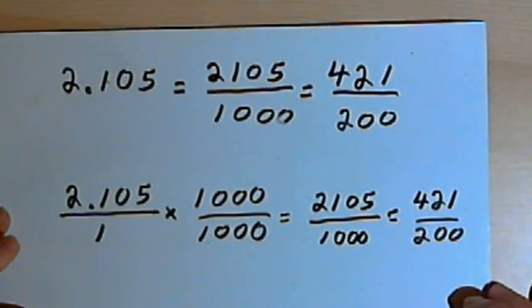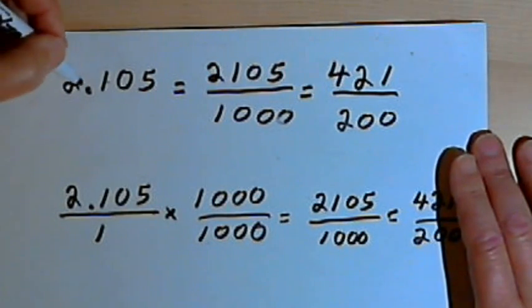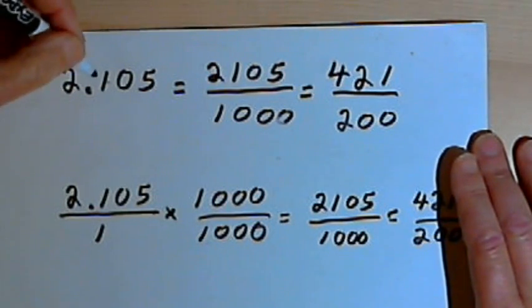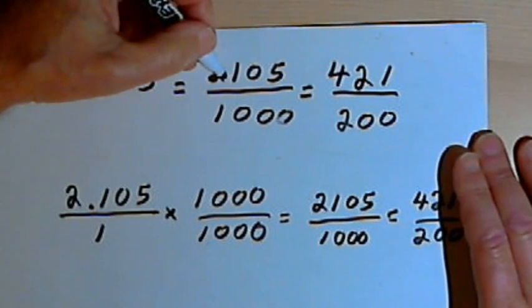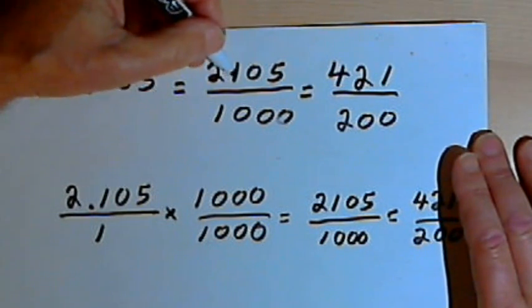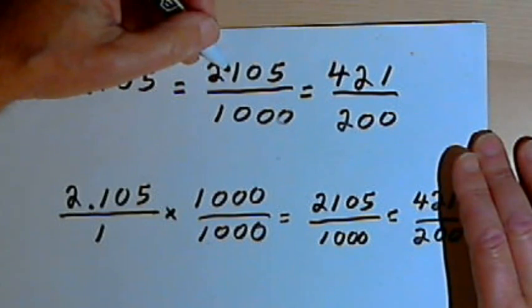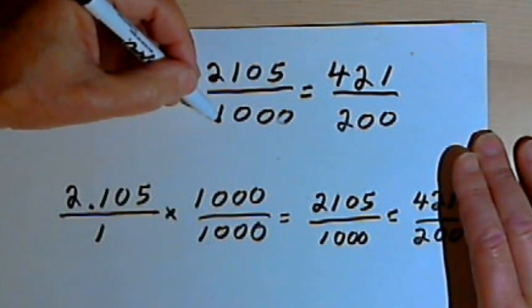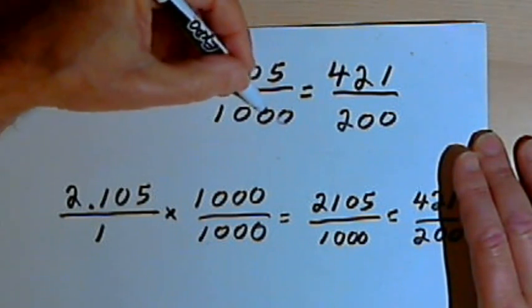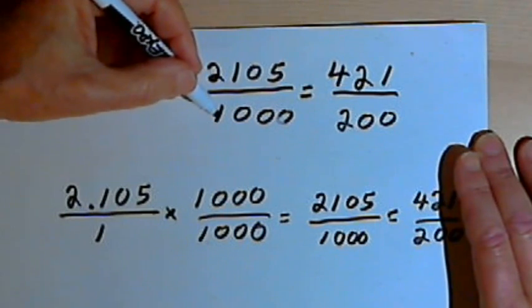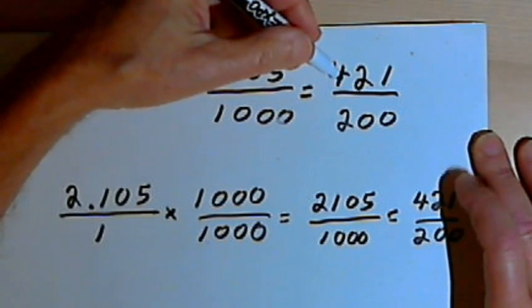So repeating the steps one more time for you. One method would be to take the number, the original decimal number, rewrite it without the decimal point. Make that the numerator of your fraction. For the denominator, you're going to have a 1. You're going to count the number of digits after the decimal point, and put that many zeros after the 1 in the denominator, and then reduce your fraction if you can.